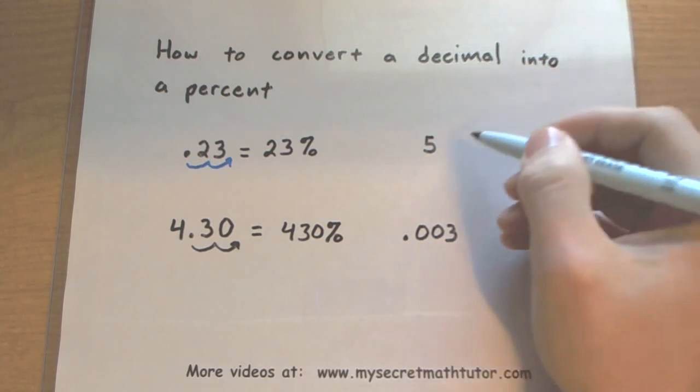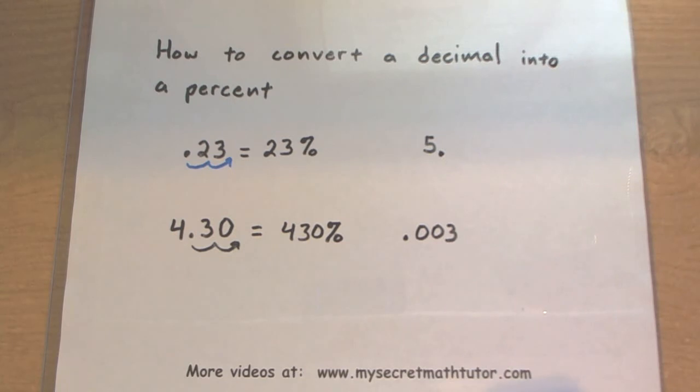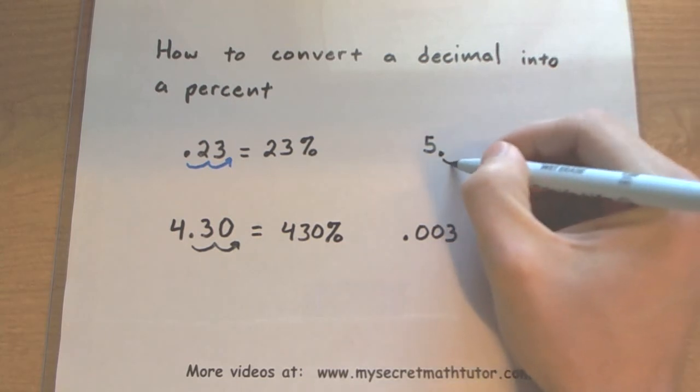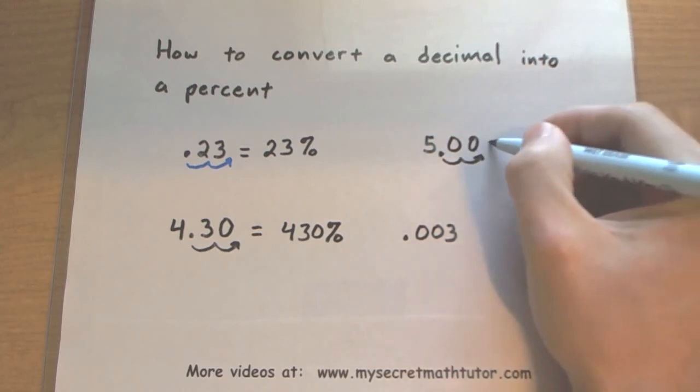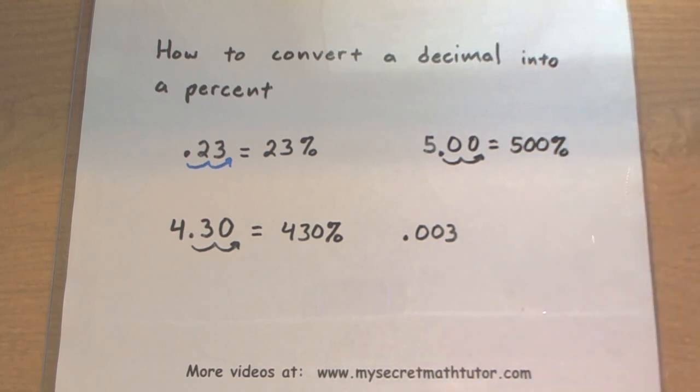Let's look at this other example. It looks like I don't have a decimal, but in reality there's one right behind the five. So when this moves over twice, I'm going to need two placeholders, and so 5 is equal to 500%.